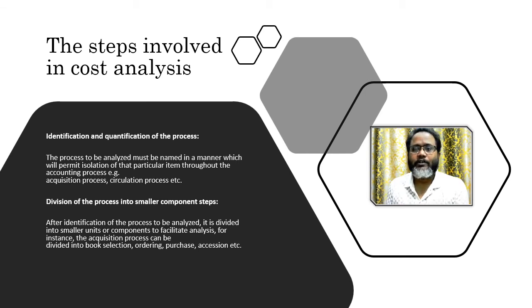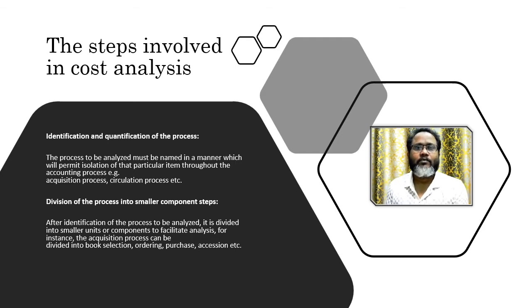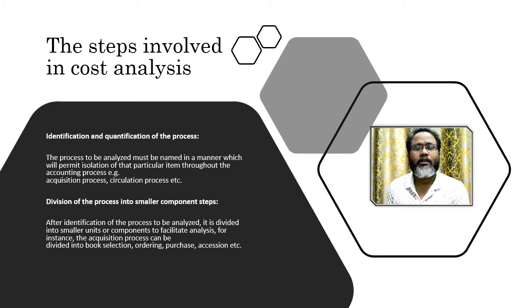The second step is the division of the process into similar component steps. After identification of the process to be analyzed, it is divided into smaller units and smaller components to facilitate analysis. For instance, the acquisition process is further divided into sub-processes like repurchasing. Practically, in the case of a library, you have to identify systems involved — such as the circulation system, the acquisition system, and the charging and discharging system.